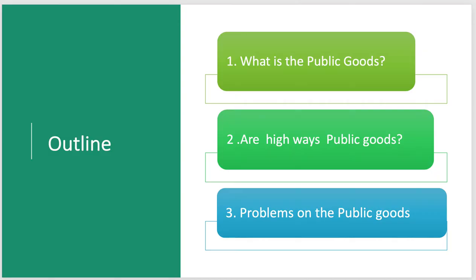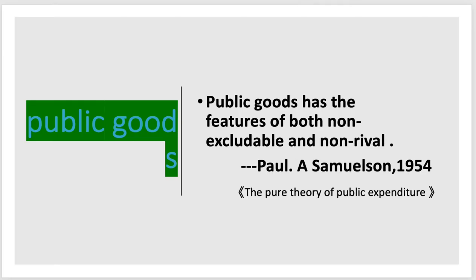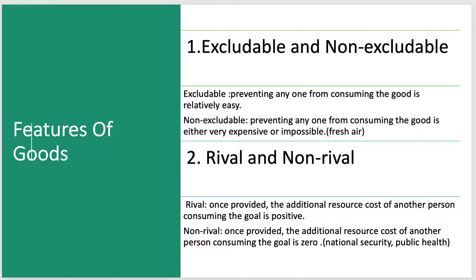So we're going to talk about highways for the most part. First of all, what is a public good? And we're going to say, are highways a public good? And what are the problems with and about public goods? Paul Samuelson, in 1954, defined public goods as featuring both non-excludable and non-rival. That's a great definition, except we've probably got to define what non-excludable and non-rival means.